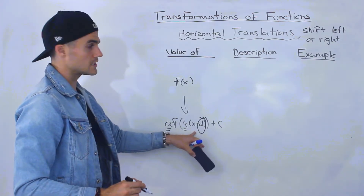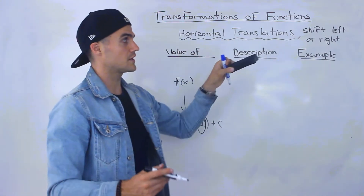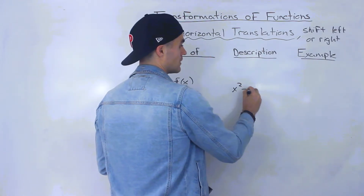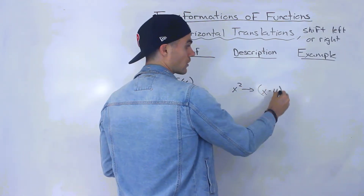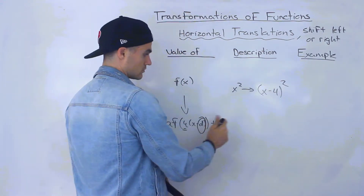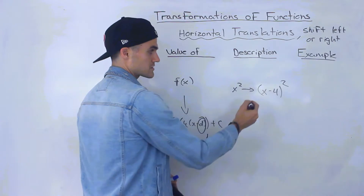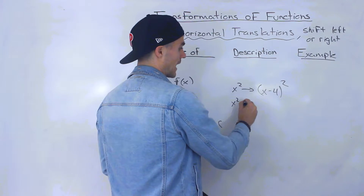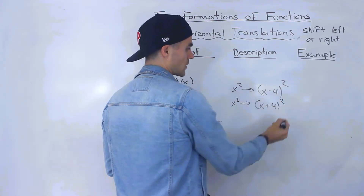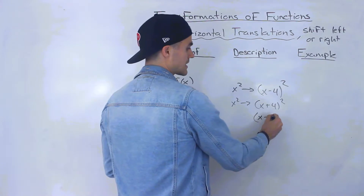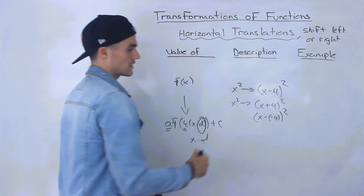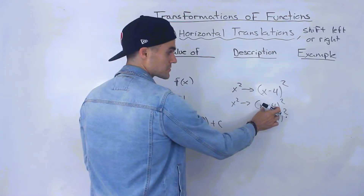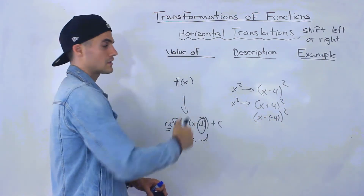Depending on the value of d, that's going to tell you whether you're shifting a function left or right. For example, if we have x squared and then x minus 4 squared, notice the format is x minus d, so the d value is positive 4 — we're shifting it 4 to the right. Or if we had x plus 4 squared, we can rewrite that as x minus negative 4. The d value, we always take the opposite sign, so d would be negative 4. So x plus 4 squared is x squared shifted 4 to the left.